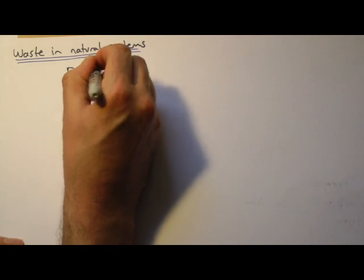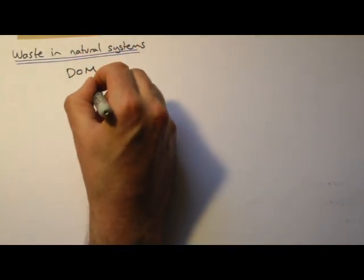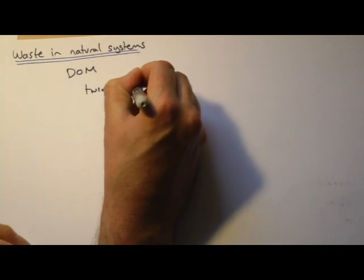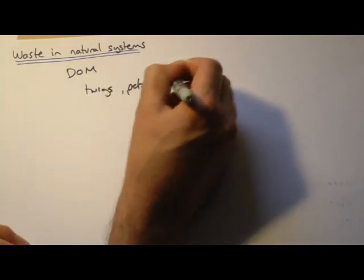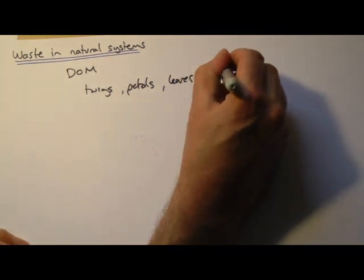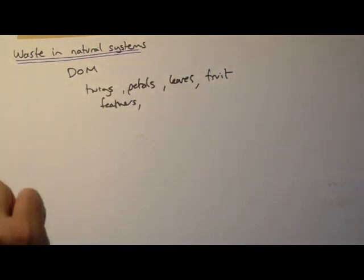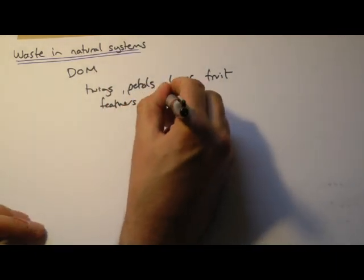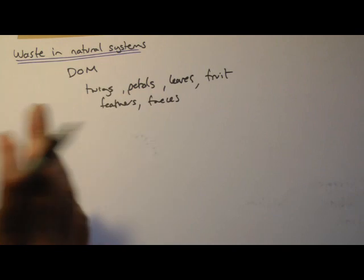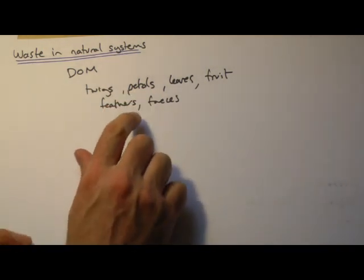We've had this idea before of dead organic matter, D-O-M. This would be things like twigs, petals that fall off plants, leaves, fruit, uneaten fruit, and from animals, things like feathers, faeces, you could even put in there scales, claws, anything that can kind of fall off, all the actual dead animals and plants themselves.